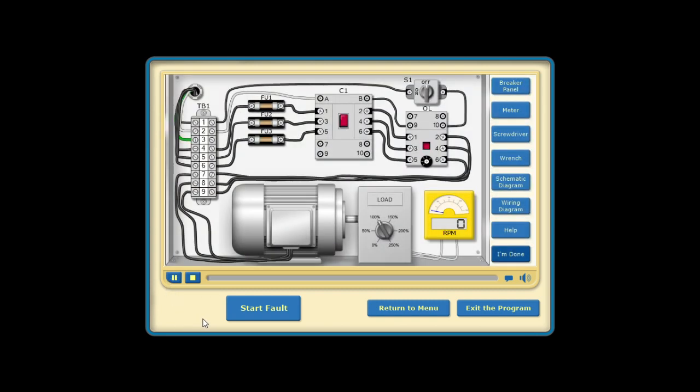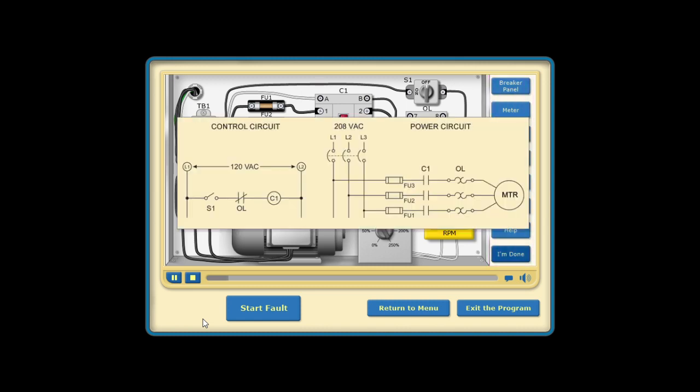This demo lets you attempt a fault on one of the motor labs from troubleshooting motor circuits. But first, you should know a bit about the circuit and the troubleshooting tools. The circuit used in this lab is a basic motor circuit with an off-on switch to control the operation of the motor.